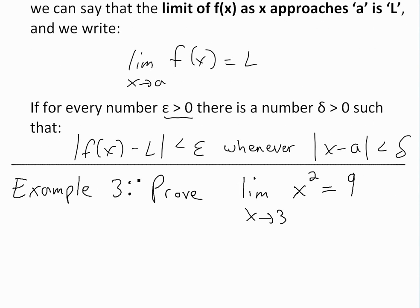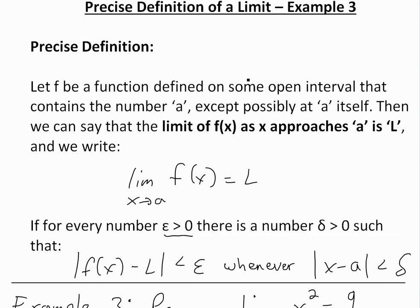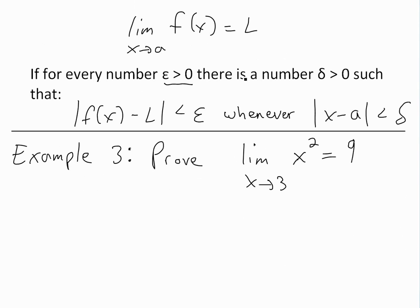Okay, so example 3 basically says: prove that the limit as x approaches 3 of x squared equals 9. Like my other examples, to prove it we'll use this definition, and all we have to do is find this delta in terms of epsilon, because epsilon is just any number — we'll pick it really small, greater than 0 — and if we can find delta in terms of epsilon, we're done.